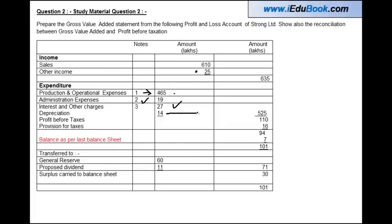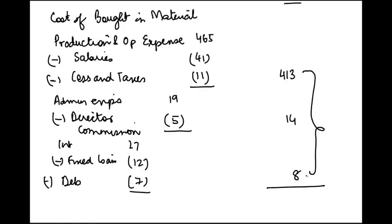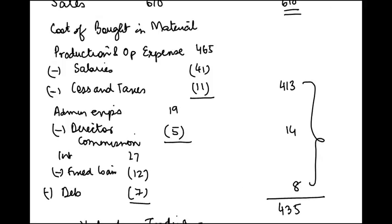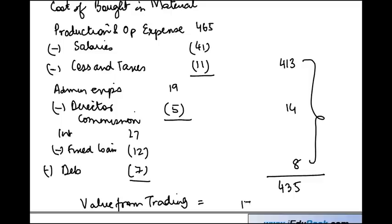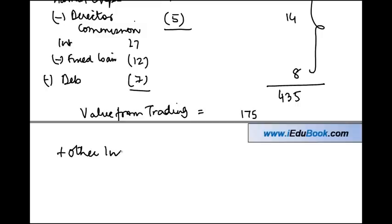Depreciation is an application to the entity, so we exclude it. Provision for taxes is an application to the government, also excluded. The cost of bought-in materials is the sum of 413, plus 14 (adjusted admin), plus 8 (adjusted interest) — wait, these sum to 435. Value from trading is 610 minus 435, which is 175. Adding other income of 25 gives you 200 as the gross value added.